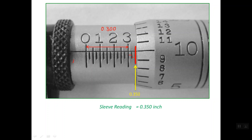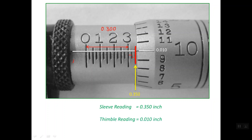Now we read the thimble scale. The reference line on the sleeve aligns with line number 10 on the thimble, so the thimble reading is 0.010 of an inch. The total reading is the addition of these two values: 0.350 plus 0.010 equals 0.360 of an inch.